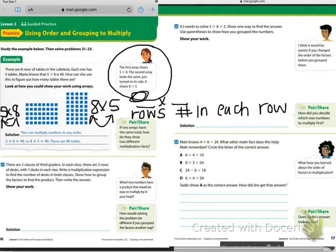Let's look at this pair share. It says if two arrays have the same total, how do they show two different multiplication facts? Think about what we said with our rows and our numbers in each row. These have the same factors, but the arrays are different. What that means is that we have five rows of eight in one array and eight rows of five in the other. We have eight in this one, and we have eight in the next one, and we have eight going all the way down. In this one, we have five in all of those rows. We have eight rows of five in this one, we have five rows of eight. That's the difference.